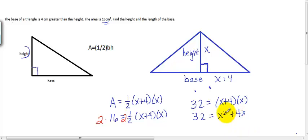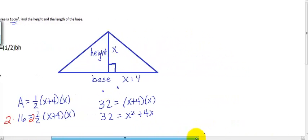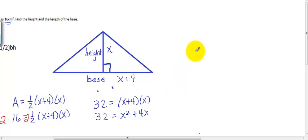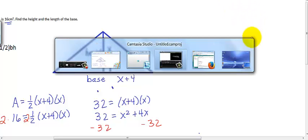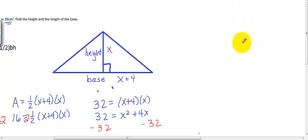Now, this type of an equation where you have a power of 2 is called a quadratic equation. And one of the methods for solving quadratic equations is to get 0 on one side and factor the other side. And that's what we're going to do. So I'm going to subtract 32 from both sides of the equation, which is going to give me 0 equals x squared plus 4x minus 32.